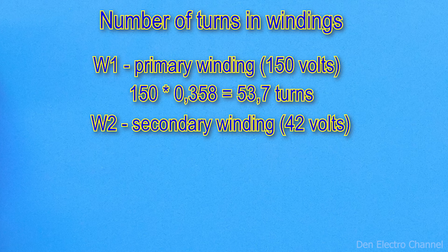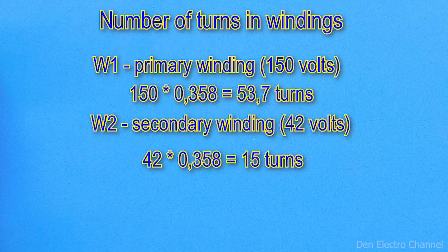Then we calculate the number of turns in the secondary winding. We take the required voltage, in my case it is 42 volts and multiply by 0.358. It turns out 15 turns.